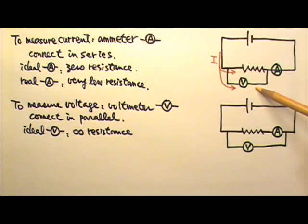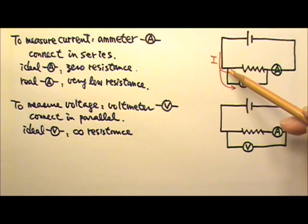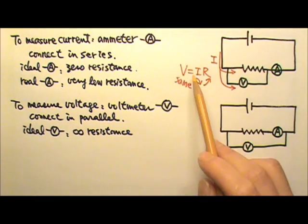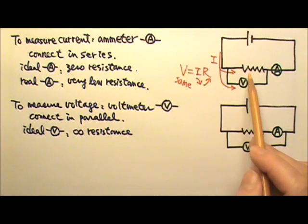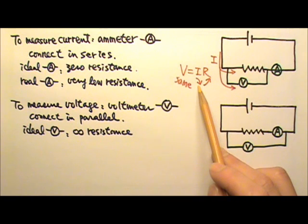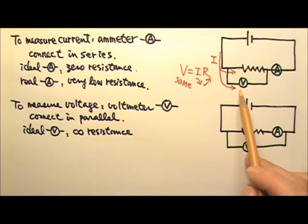Because these two elements are in parallel, they share the total current while having the same voltage. V equals IR, they get the same voltage. That means the one with the larger resistance gets less current. So if the voltmeter has infinite resistance, it would get zero current share.